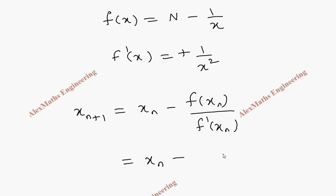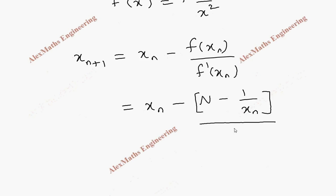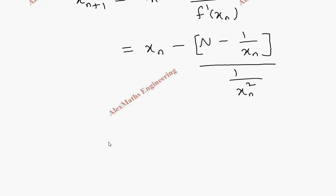f of x_n is N minus 1 by x_n within a bracket, divided by 1 by x_n square. Now rearranging this, this x_n minus this will come to the numerator as a product: x_n square into N minus 1 by x_n.